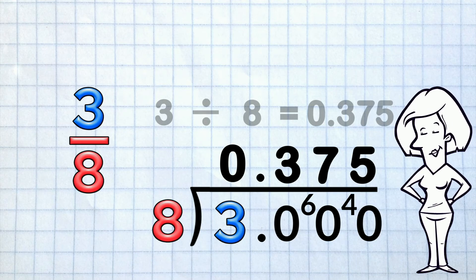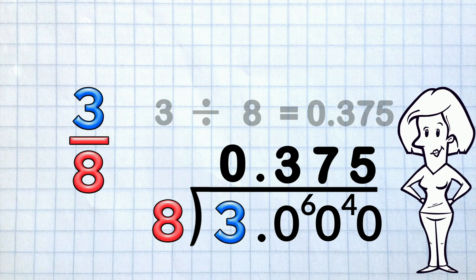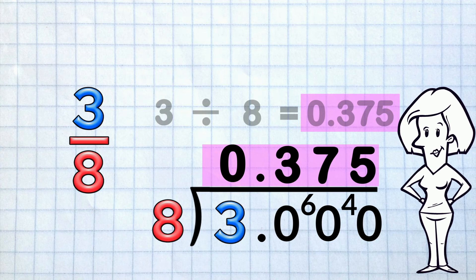By calculator and now on paper, we see that 3 eighths is 0.375.